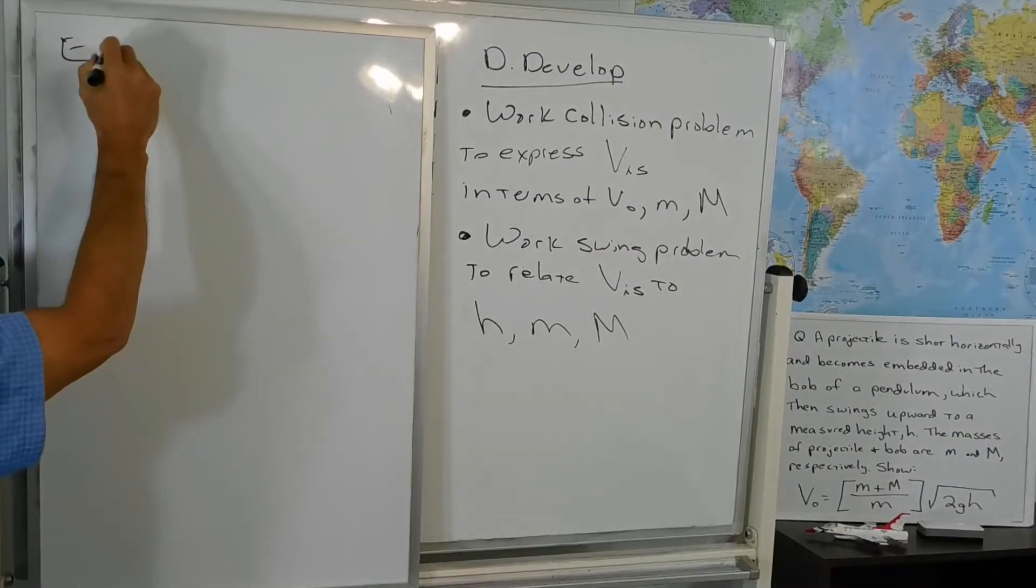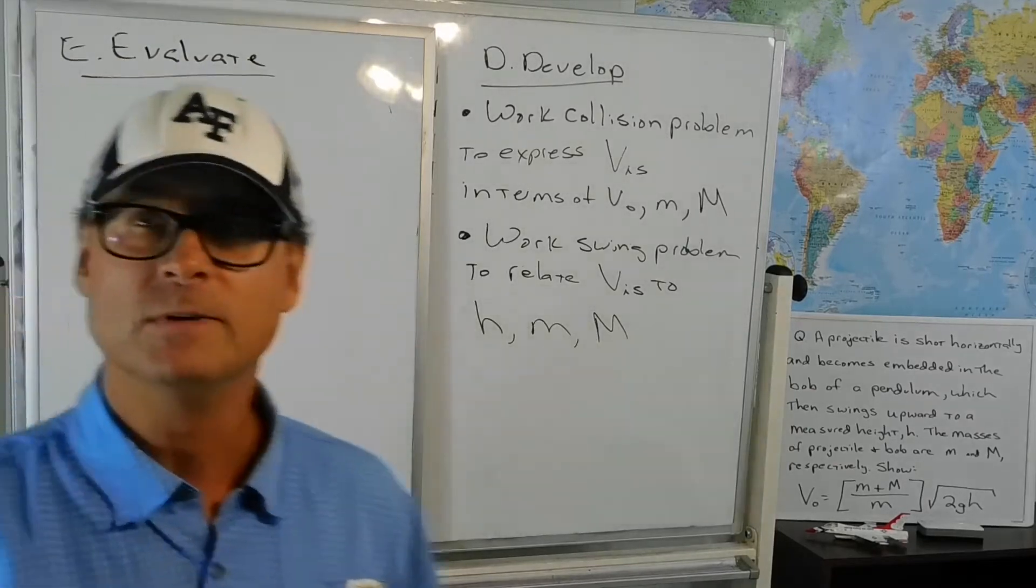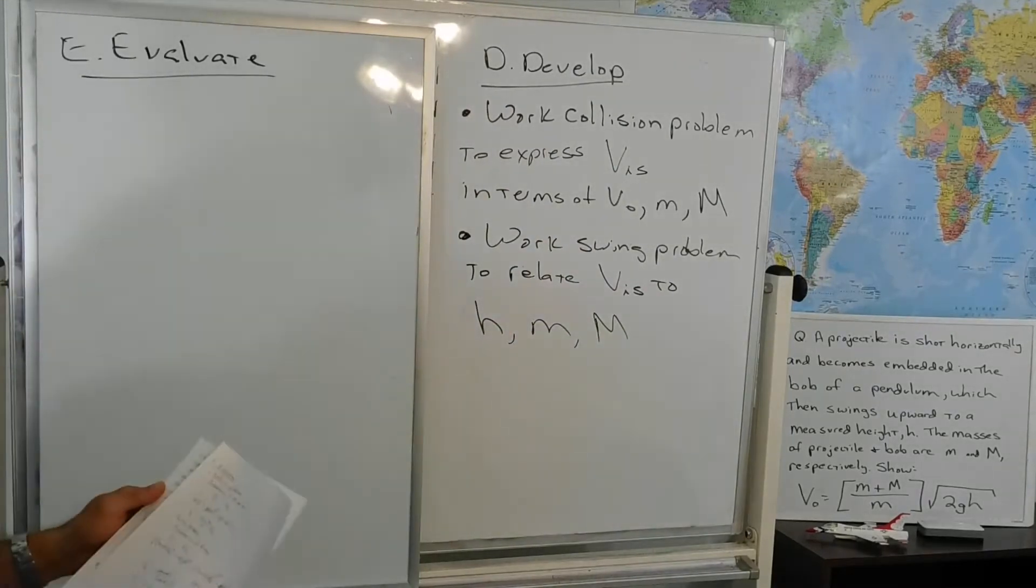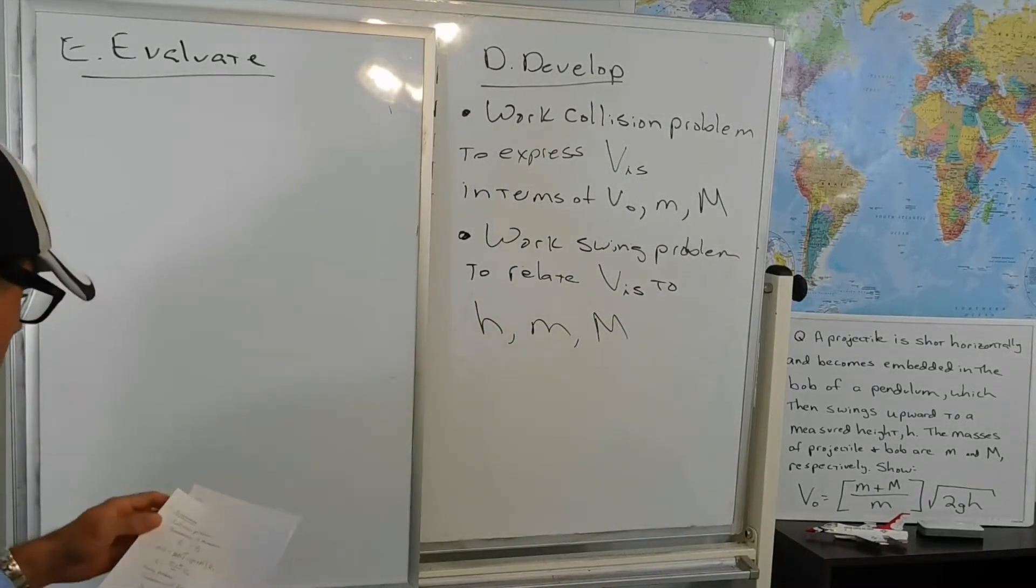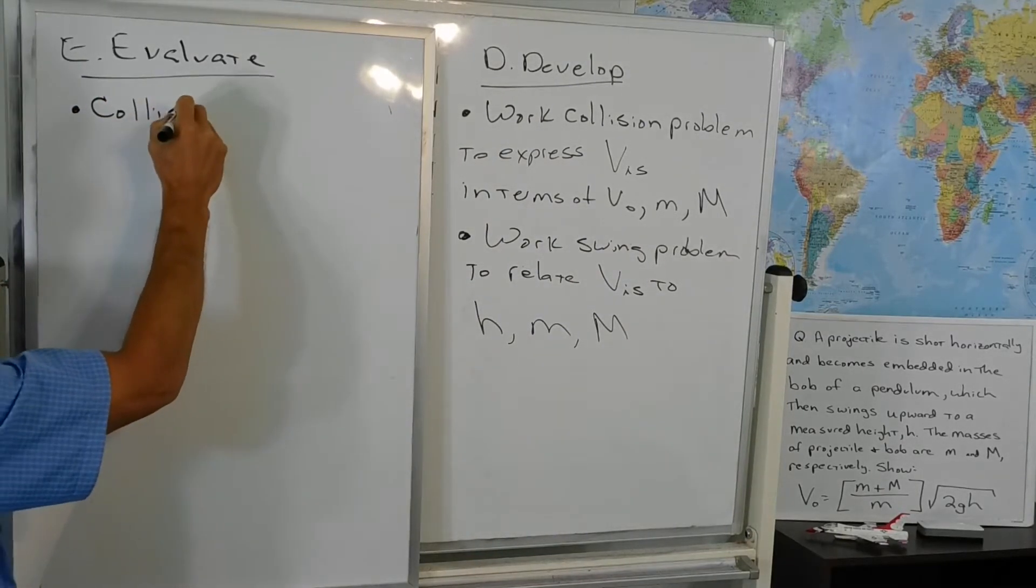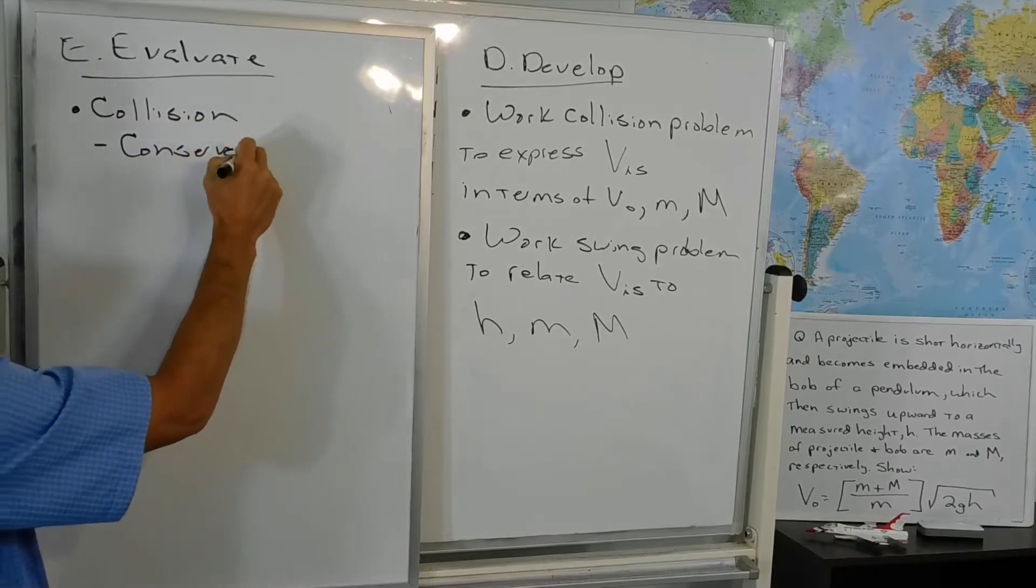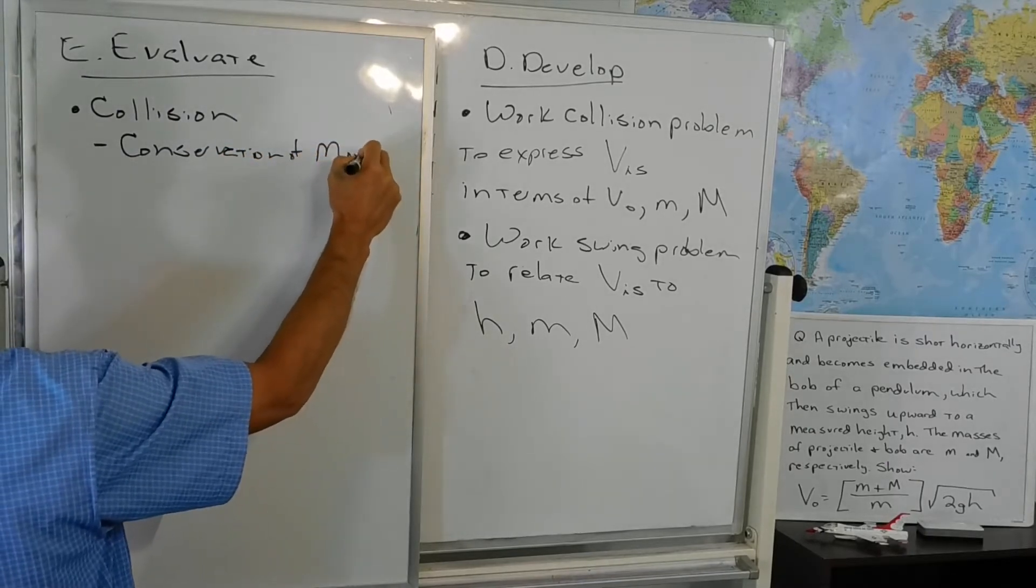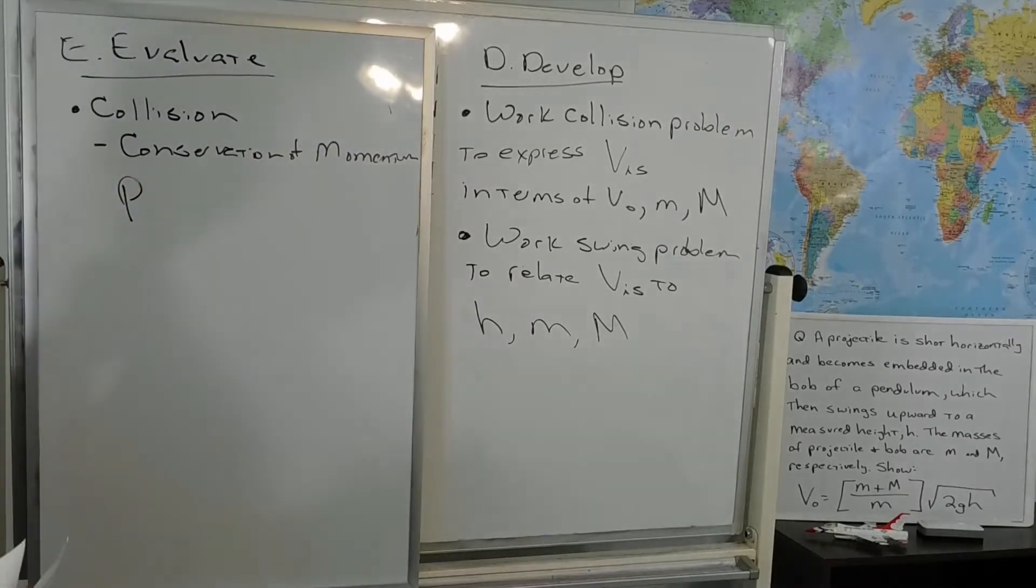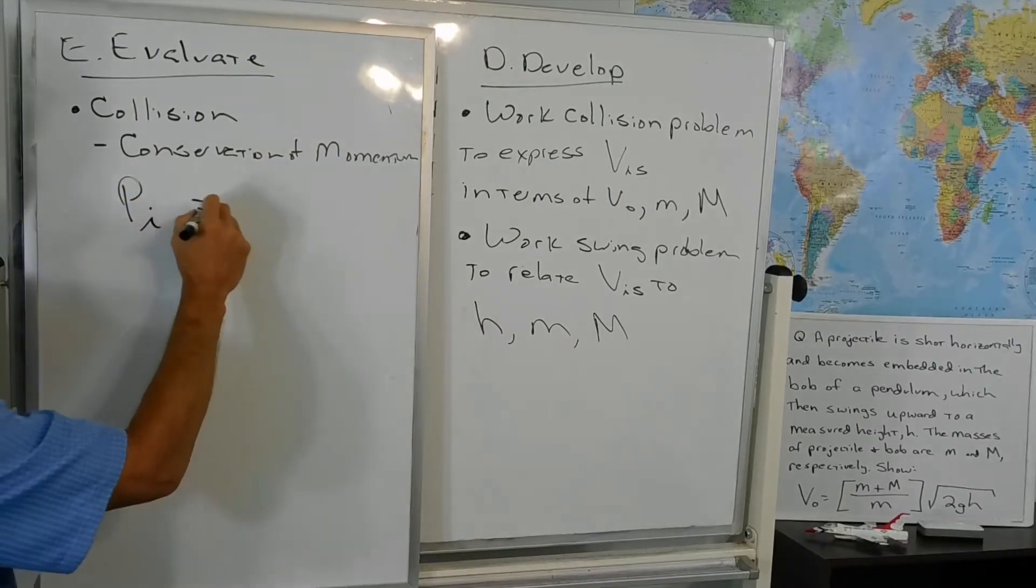As we evaluate, we want to keep in mind that for the first half of the problem, the swing isn't really important. It's just that there's this collision between two objects with the given masses. One of them starts at rest. One of them starts with V naught. So let's go ahead and work the collision problem. The principle here is momentum conservation. And the big thing with conservation momentum. Now this is all in one direction, in one dimension. So we can dispense with the vector notations. It's just P initial is equal to P final.